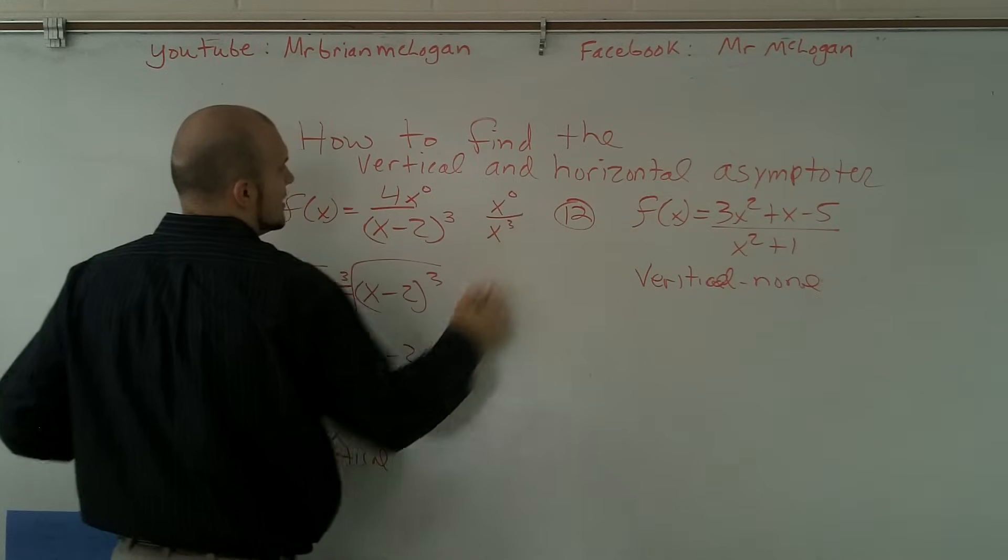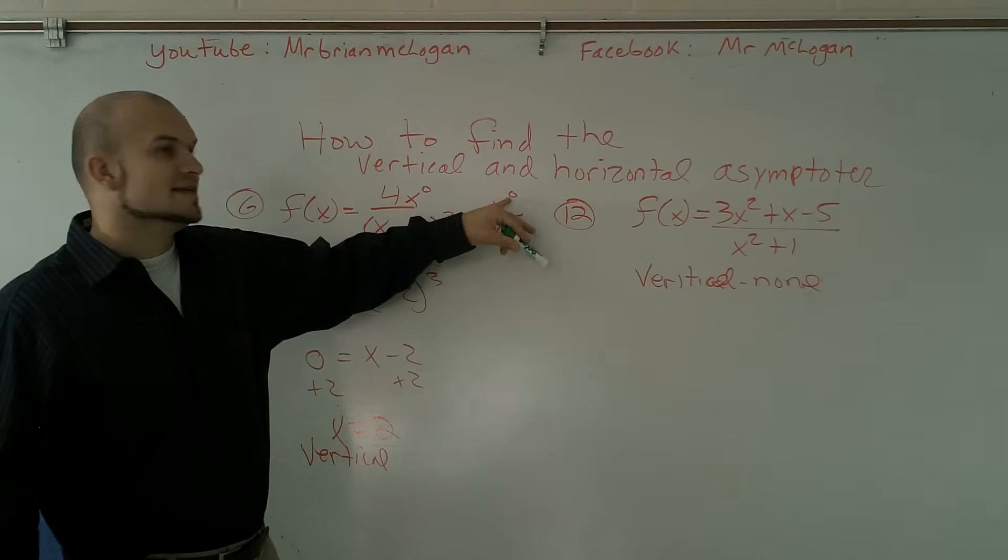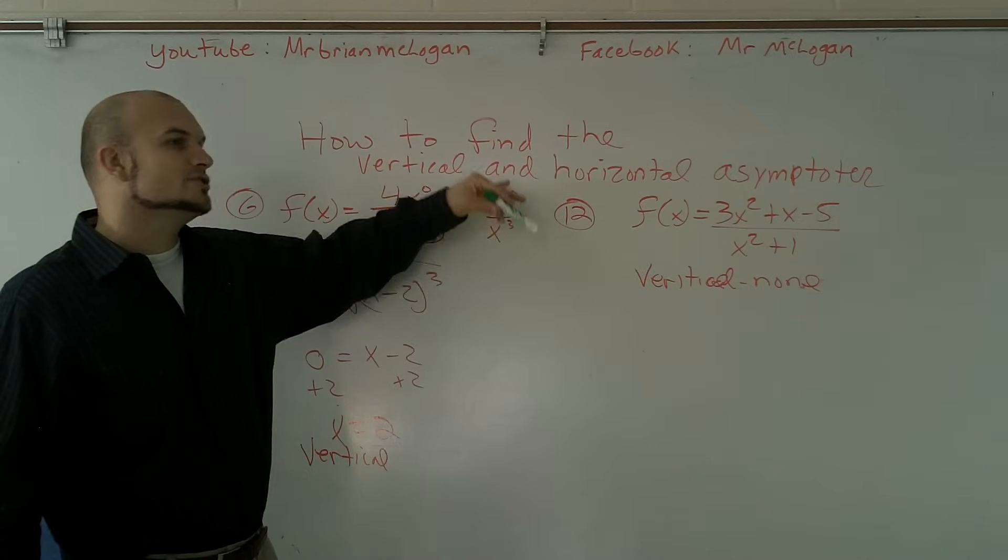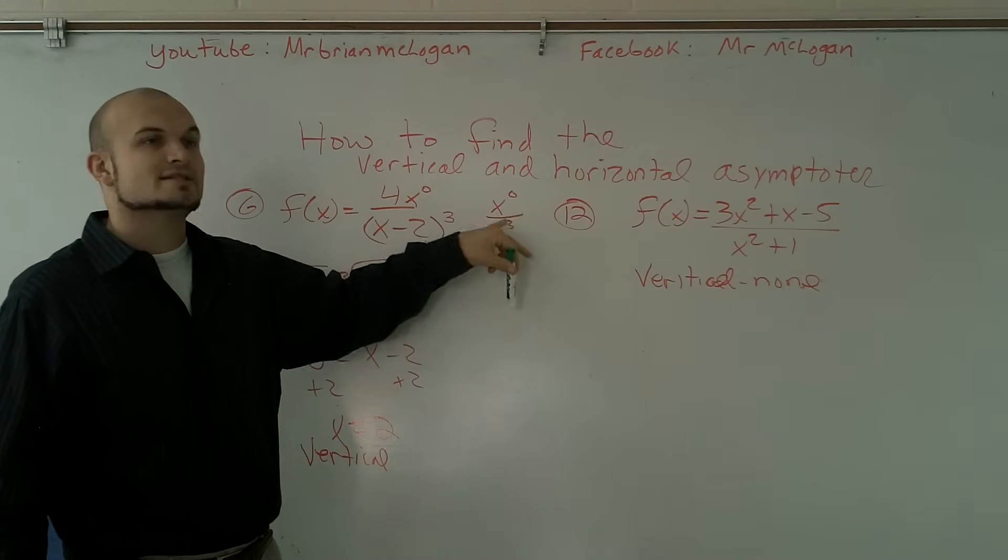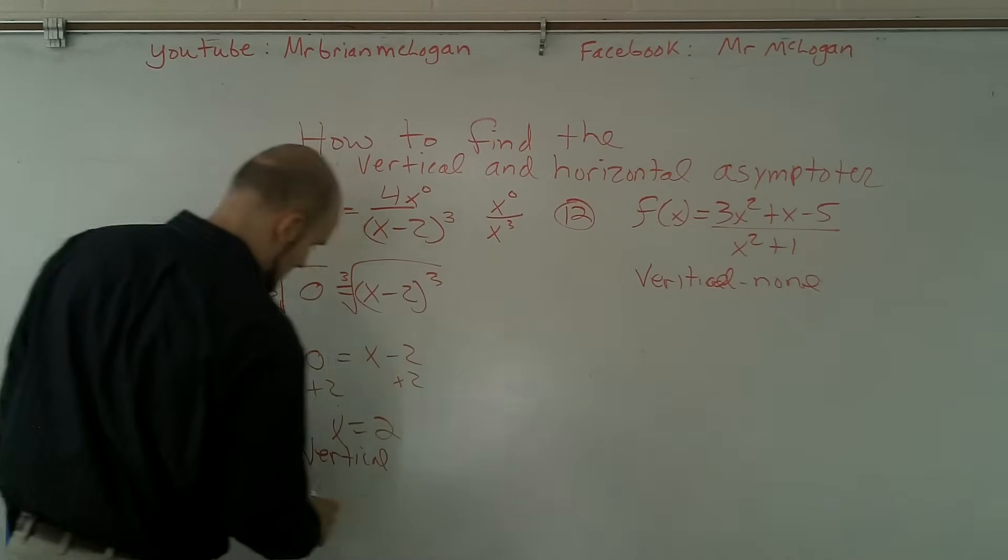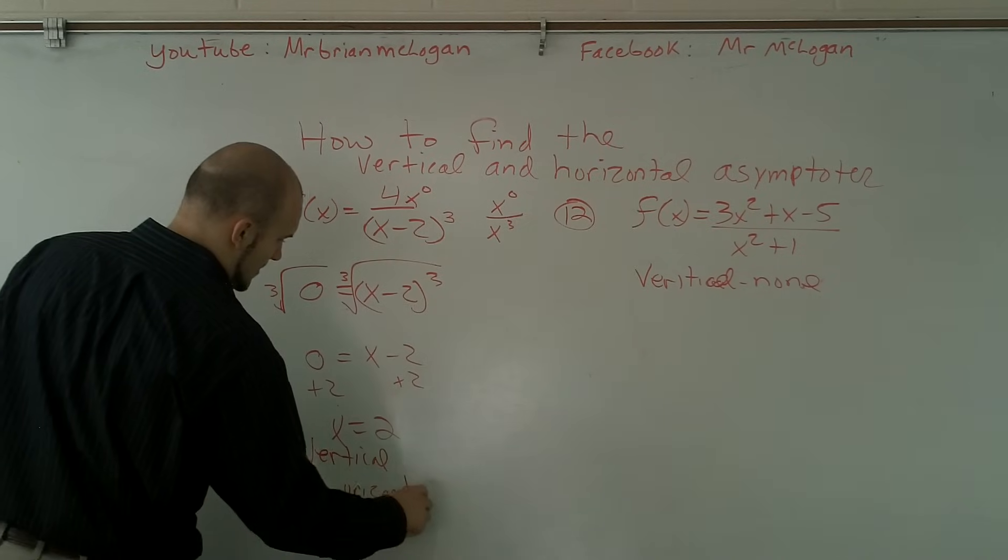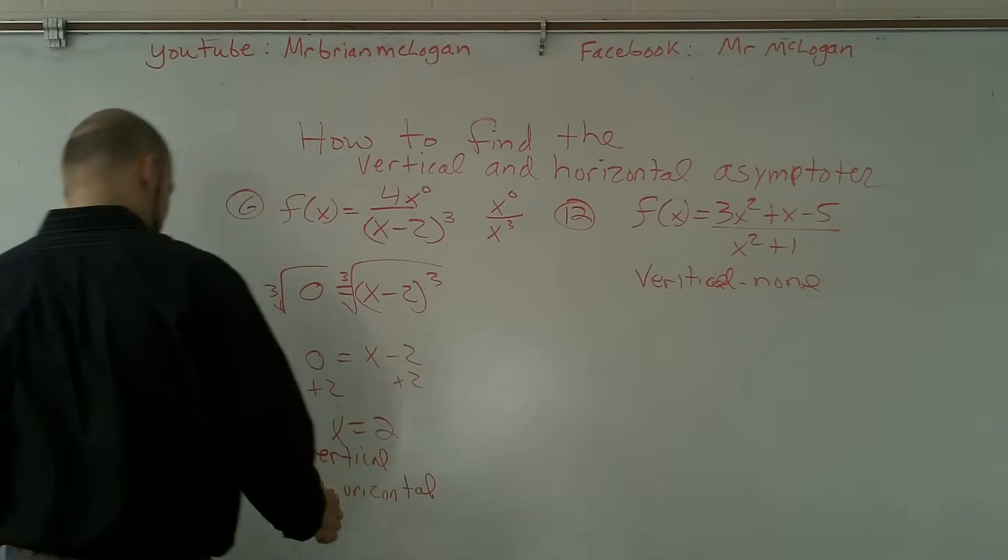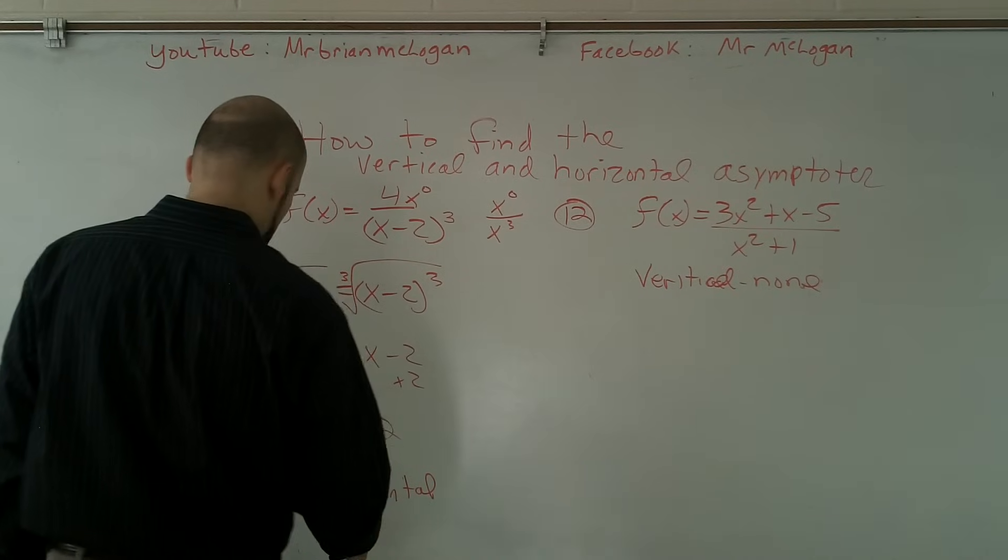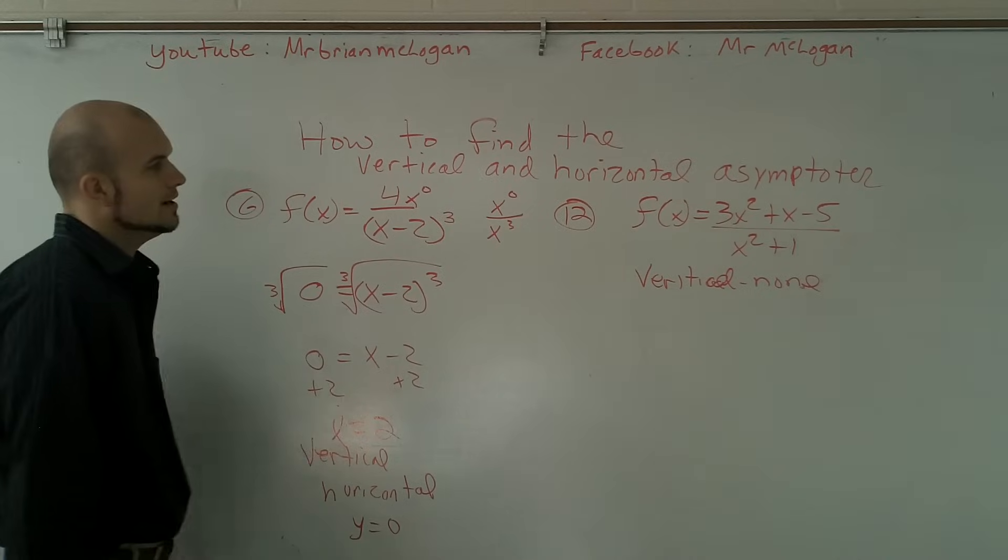And if you guys remember, that whenever the degree in the numerator was less than a degree in the denominator, therefore, you have a horizontal asymptote of zero. So therefore, your horizontal equals y equals zero.